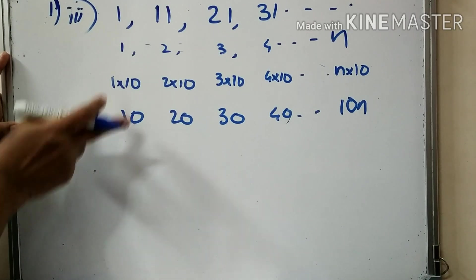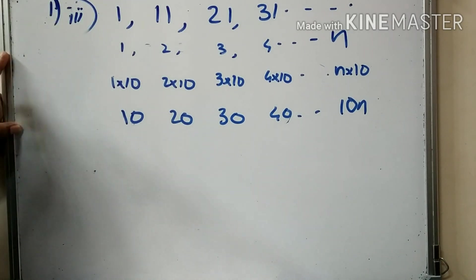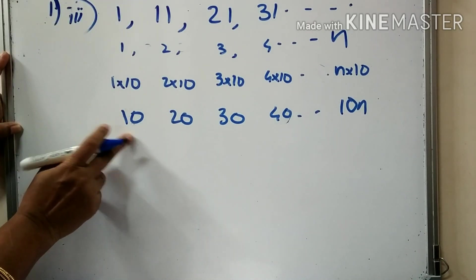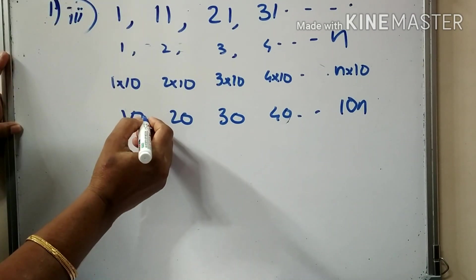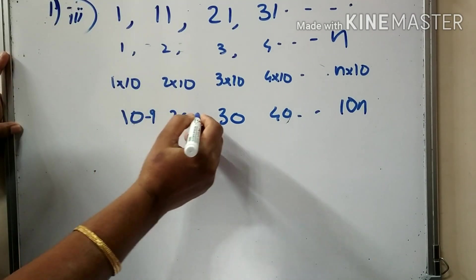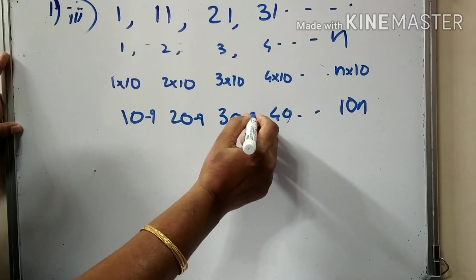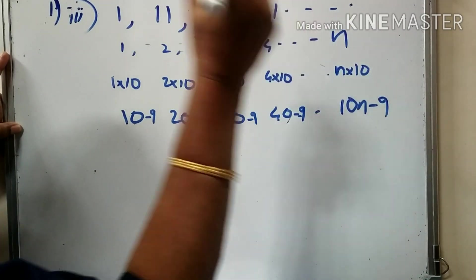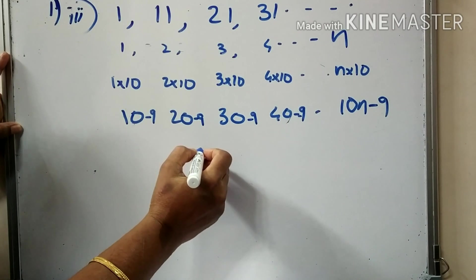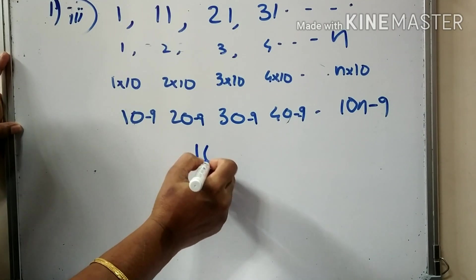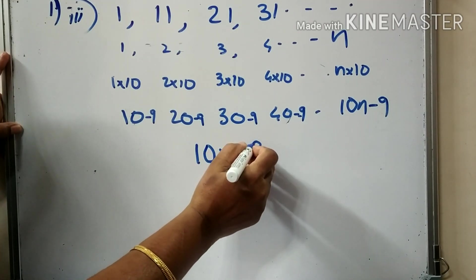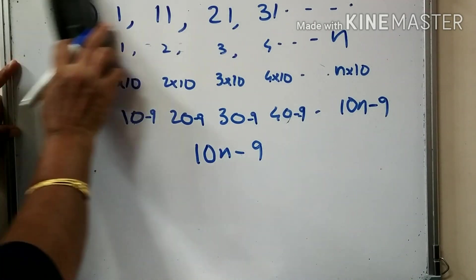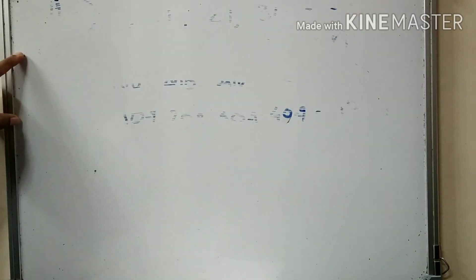How many numbers ending in 1 do you have? There will be 10n minus numbers — 10n minus 9. This happens in 1 — they will have to write it down.